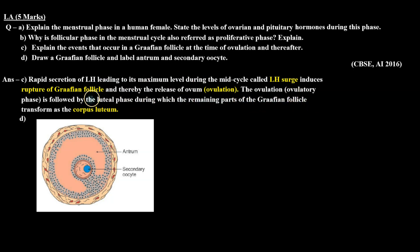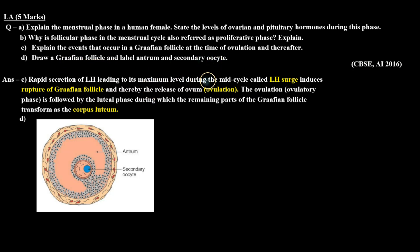D part mein humein Graafian follicle ka diagram draw karna tha aur usme antrum aur secondary oocyte ko label karna tha. So here is the diagram of the Graafian follicle — here is the antrum, which is the fluid-filled cavity, and here is the secondary oocyte. So I hope this question is clear to you.